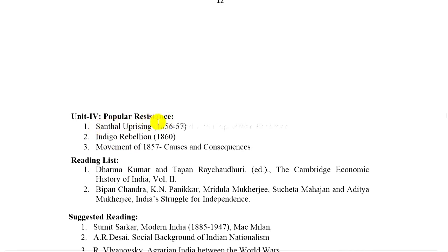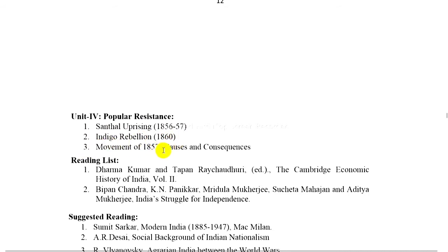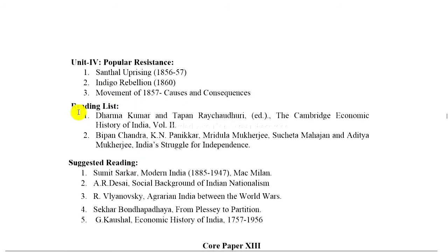Unit 4: Popular resistance. 1. Santal uprising between 1856 to 1857. 2. Indigo rebellion 1860. 3. Movement of 1857 — causes and consequences. Here are some of the reference reading list.